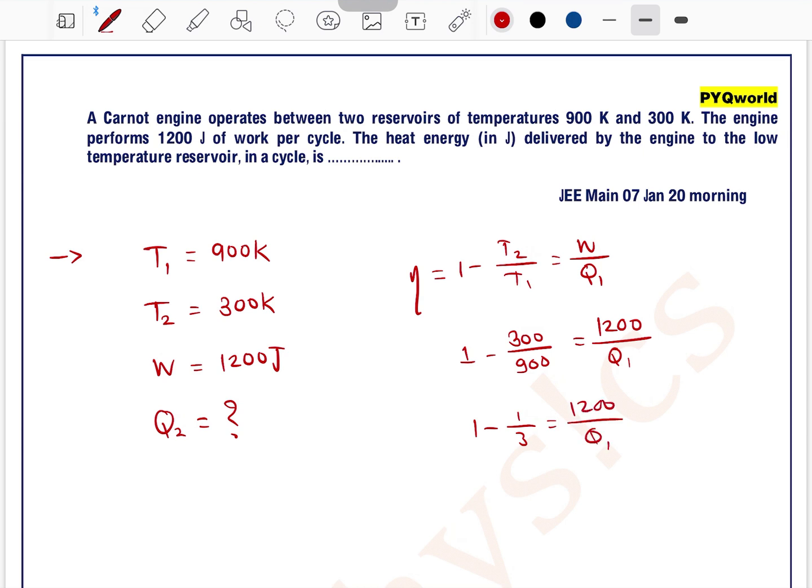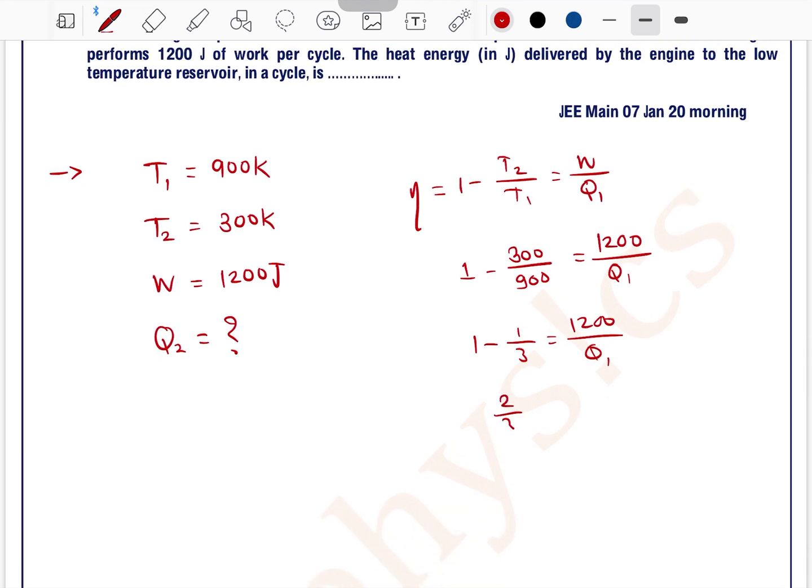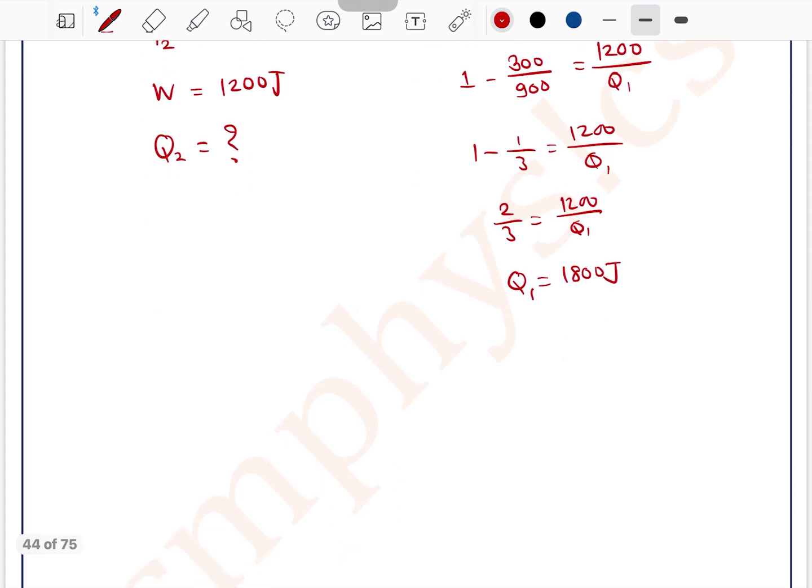1 minus 1 by 3 is equal to 1200 by Q1. This is equal to 2 by 3 is equal to 1200 by Q1. So Q1 is equal to 600 into 3 is 1800 Joule. So this is Q1.